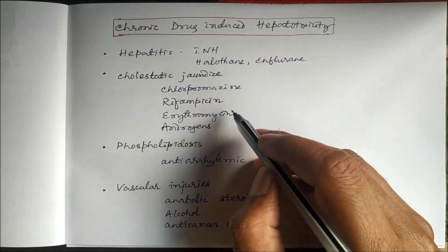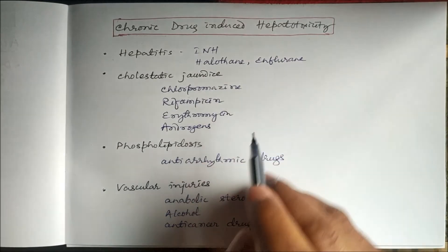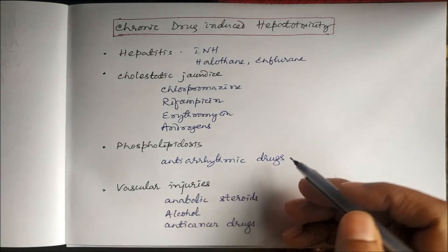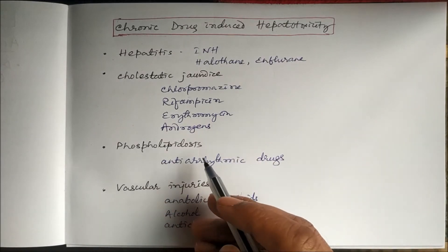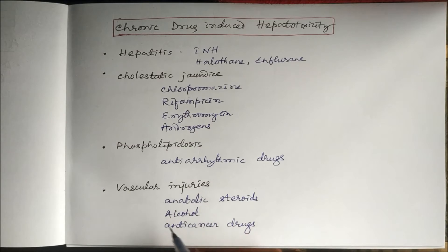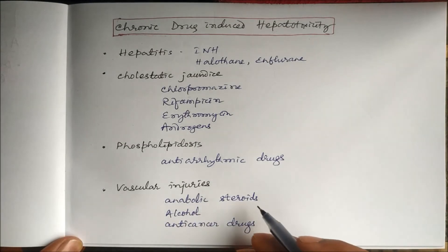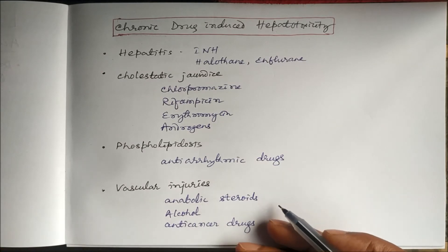Certain drugs produce cholestatic jaundice, such as chlorpromazine, erythromycin, and androgens. Anti-arrhythmic drugs can cause phospholipidosis.